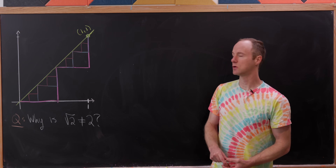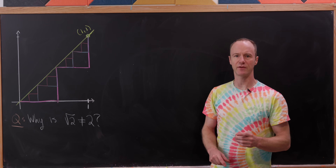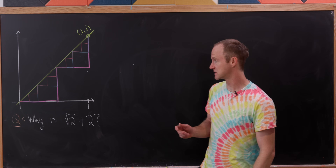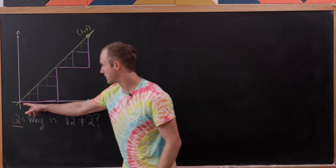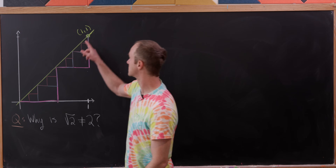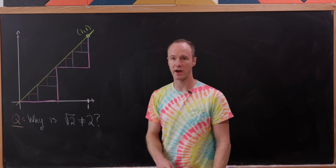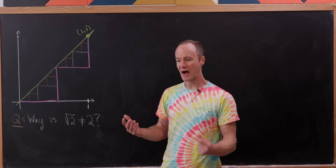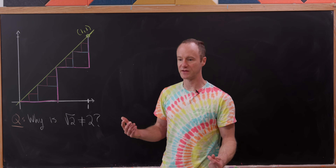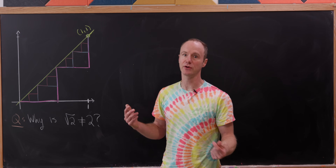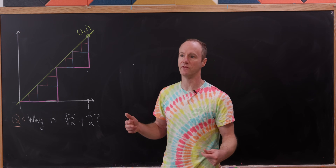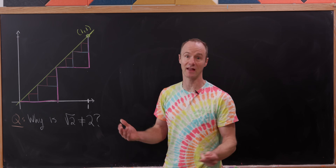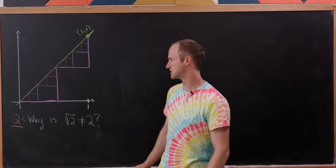Let's say we've got the line — maybe we could call it y equals x — and it goes from the origin to the point (1, 1). By the Pythagorean theorem, that line segment is pretty clearly of length square root of 2.